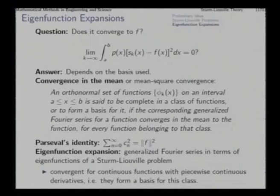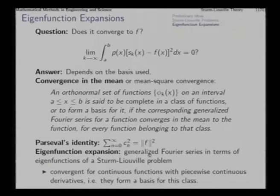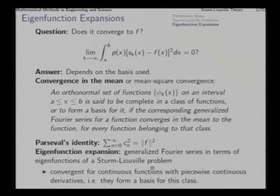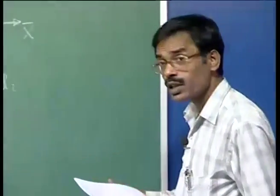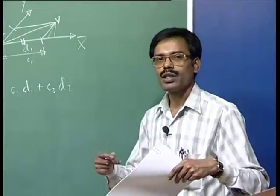Another point from the previous lecture: eigenfunction expansions give us generalized Fourier series — a series representation in terms of eigenfunctions of a Sturm-Liouville problem — which converges for all continuous functions with piecewise continuous derivatives. There are many possible Sturm-Liouville problems, each providing one family of eigenfunctions. In different kinds of applications, different families of eigenfunctions are found suitable.